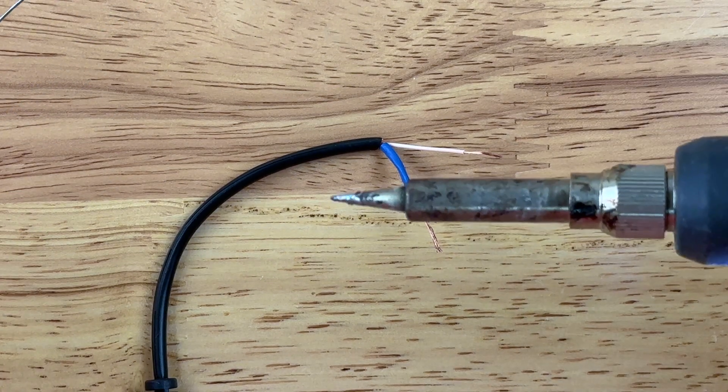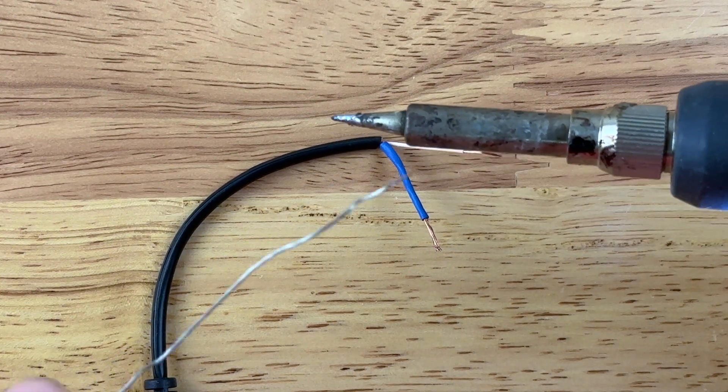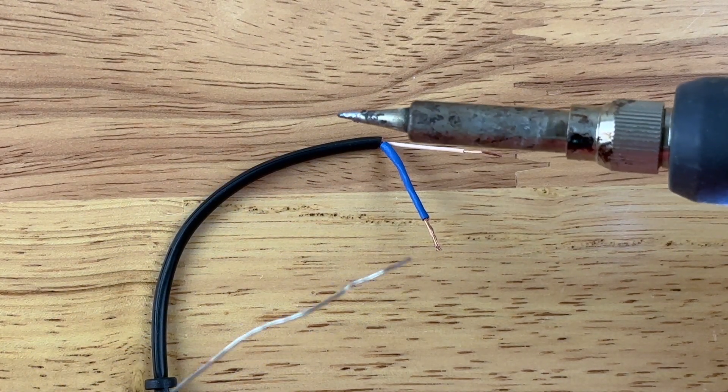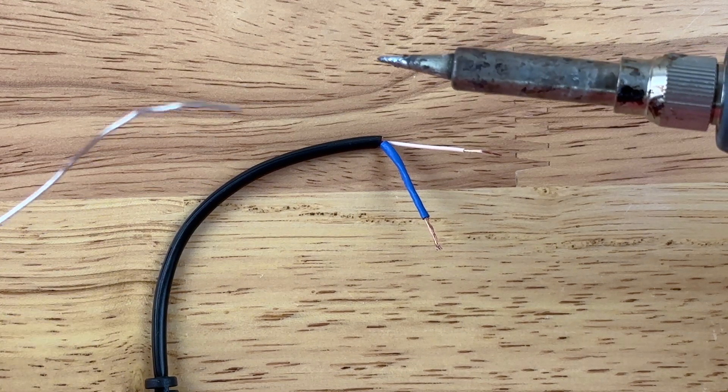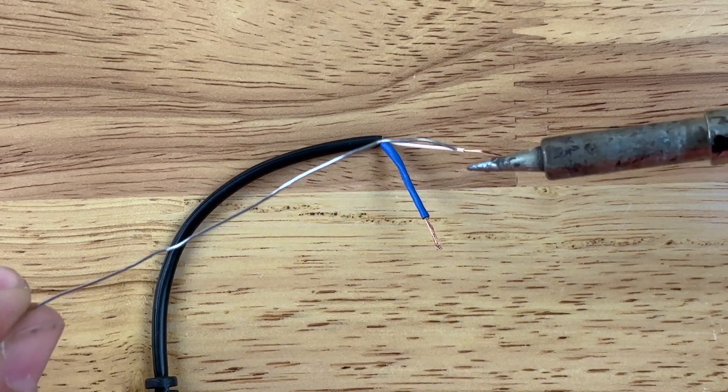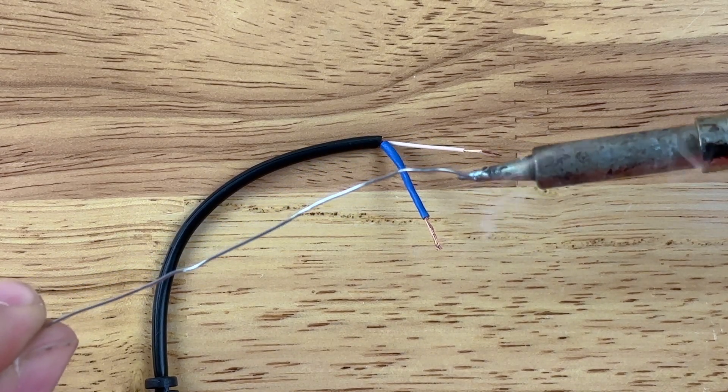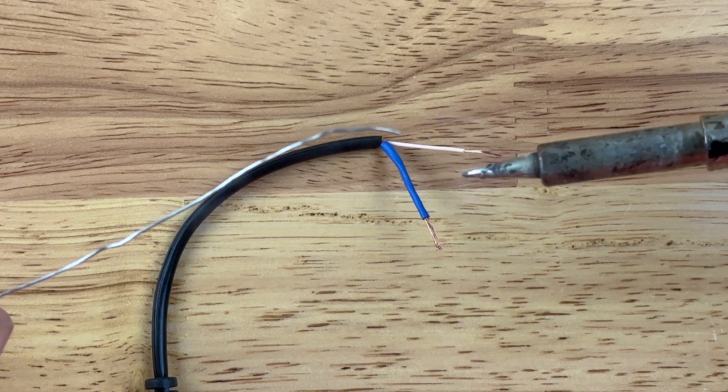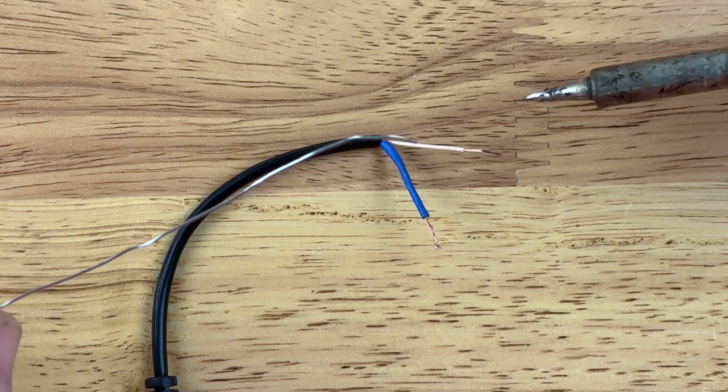Now the tip of this soldering iron is very hot, so make sure you do not touch it or make sure you don't leave it somewhere where it could catch something on fire. The solder is basically a metal that melts very easily, and it makes a good electrical connection.